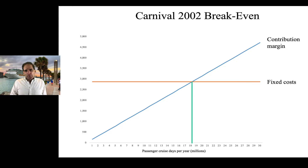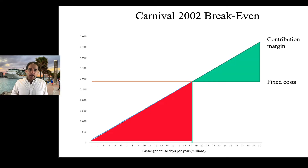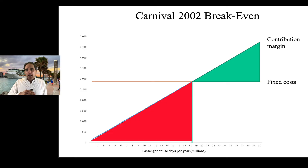What this allows us to calculate is the point at which our contribution margin covers our fixed costs — that's the break-even point that gives the chart its name. Prior to this point, we're losing money in the sense that we are not generating enough incremental contribution margin to cover our fixed costs. After the break-even point, we're making money in the sense that the incremental cash we're generating from our passengers is enough to cover our fixed costs and then some. This is the essence of a break-even analysis.